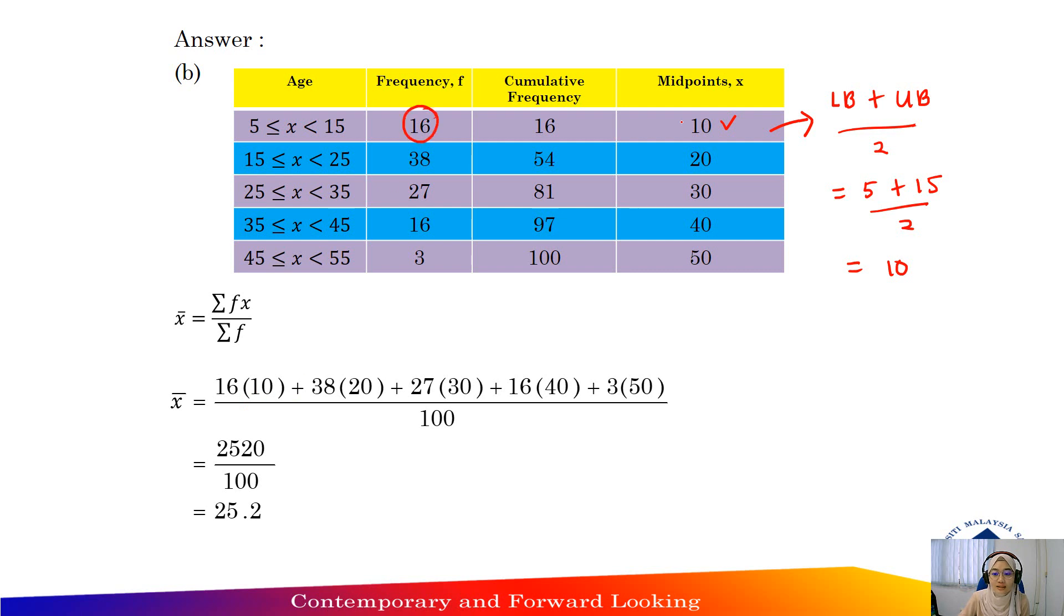16 times 10, frequency 16 times 10, the midpoint x. And then plus 38 times 20, plus 27 times 30, plus 16 times 40, plus 3 times 50.